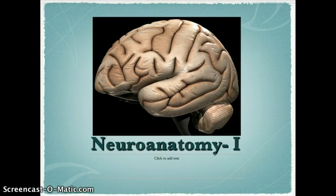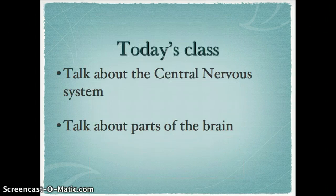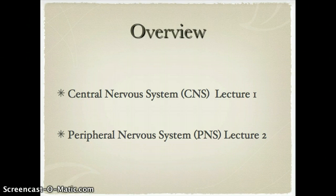Today we're going to talk about neuroanatomy. In today's class we're going to talk about the central nervous system and we will discuss parts of the brain. We'll talk about the central nervous system, the CNS, today, and next time we'll talk about the peripheral nervous system.